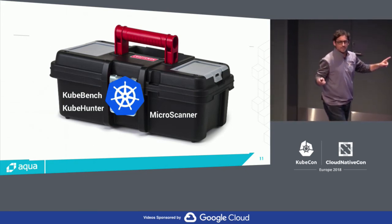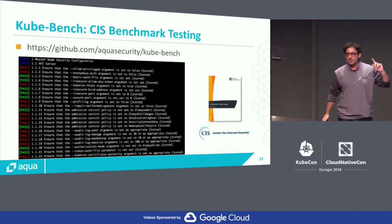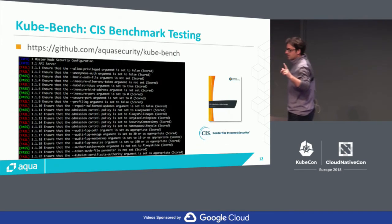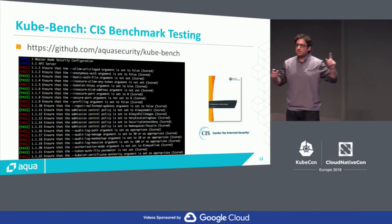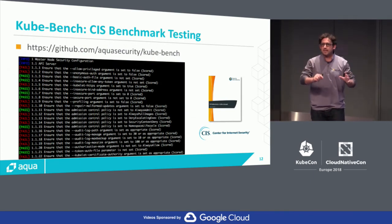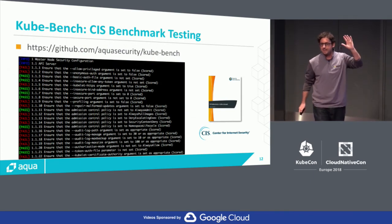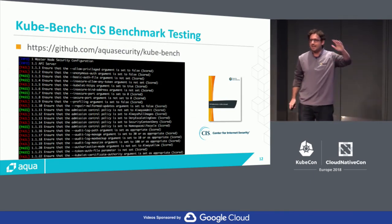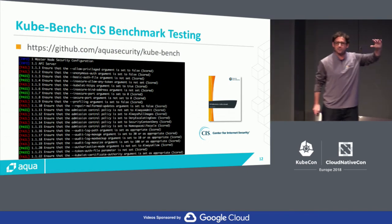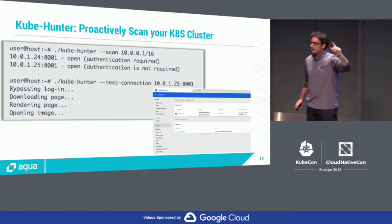Three tools I'm going to leave you with — these are all free, you can get them from the Aqua GitHub page. The first one is KubeBench, by our very own Liz Rice. This takes the CIS benchmark and automates it — it does an assessment of your Kubernetes cluster and tells you for each check whether you pass or fail. A very important tool.